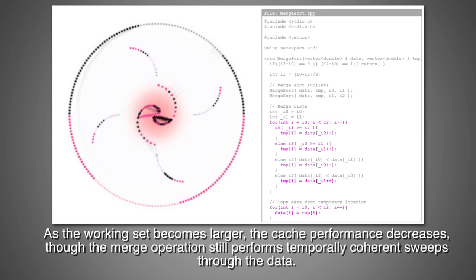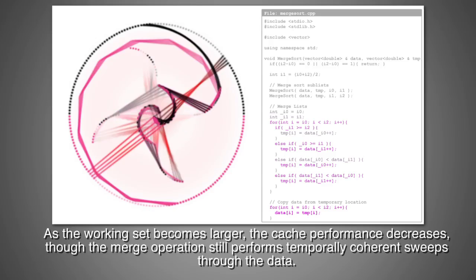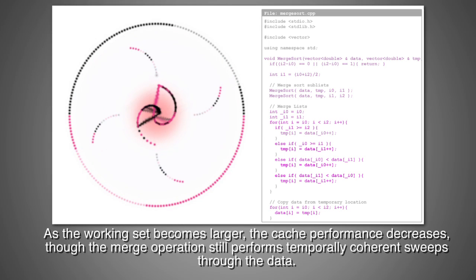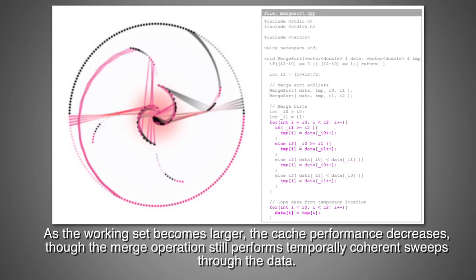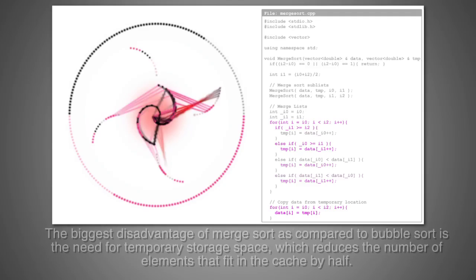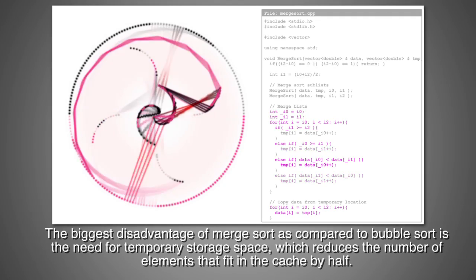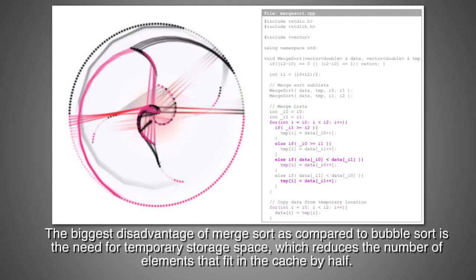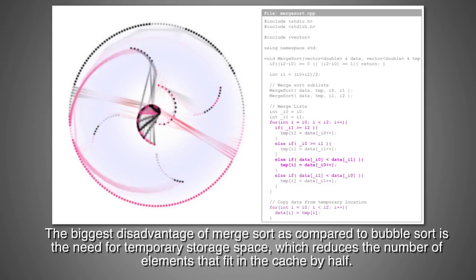As the working set becomes larger, the cache performance decreases, though the merge operation still performs temporally coherent sweeps through the data. The biggest disadvantage of merge sort, as compared to bubble sort, is the need for temporary storage space, which reduces the number of elements that fit in the cache by half.